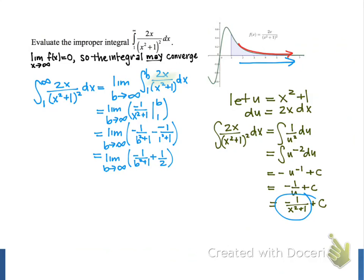To evaluate this limit, we want to consider what happens to this first quantity as b approaches infinity. As b increases, b squared also increases, and the whole denominator, b squared plus 1, will increase without bound.